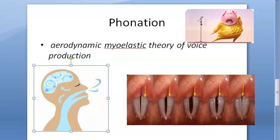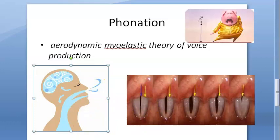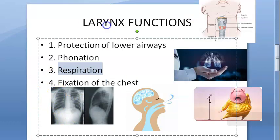The sound is then converted into speech by the modulatory action of the lips, tongue, palate, pharynx, and teeth — so air becomes sound and sound becomes speech. The intensity of sound depends on the air pressure, while the pitch depends on the frequency at which the vocal cords vibrate. So air pressure controls volume and vocal cord vibration frequency controls the pitch.